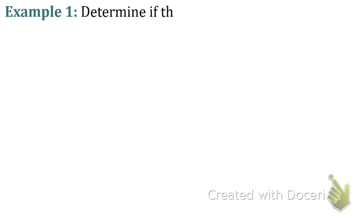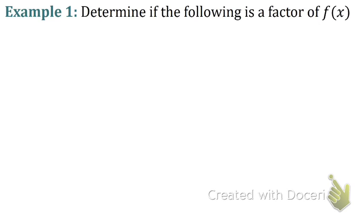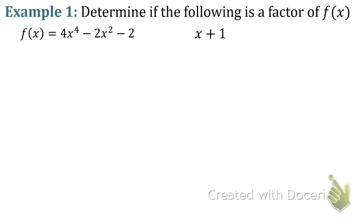So let's look at an example. We're going to determine if the following is a factor of f of x. f of x is 4x to the 4th minus 2x squared minus 2, and then we have x plus 1. The first thing we need to do is solve for x. So subtracting 1 from both sides, x equals negative 1. So that was step 1.